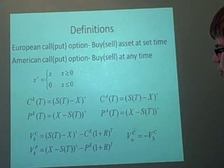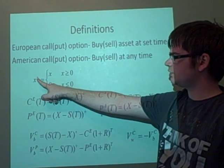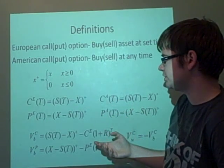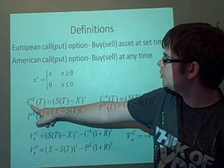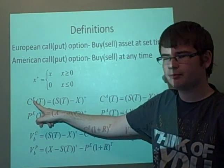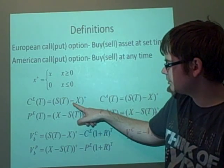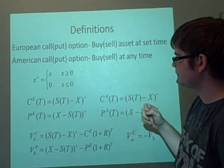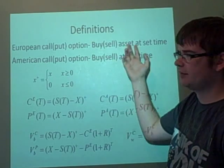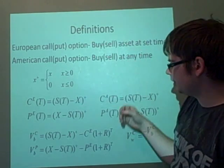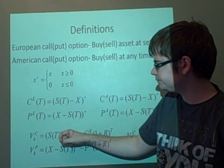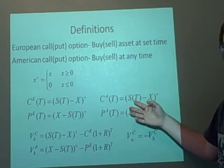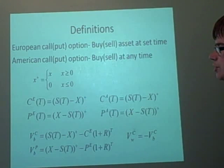One definition we're going to use here is if we put a plus at the top, a superscript, then this just means take the positive. Take it only if it's a positive value. We denote a European call option with C. This is stock minus the strike price X. So this is the amount that they've agreed to buy or sell it at. The put option is just the other way around, but we only take the value if it's positive. The American is just the same, but you've got more choice when to agree.